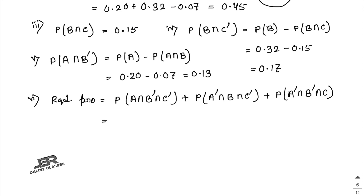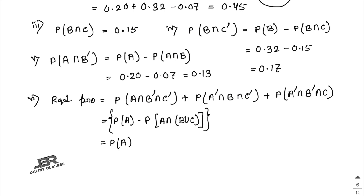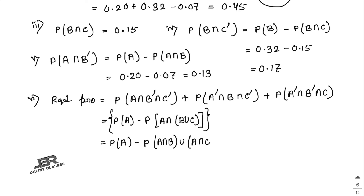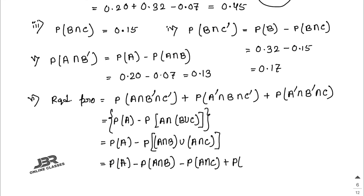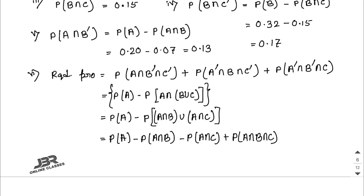For the first term: P(A) − P(A ∩ (B ∪ C)) = P(A) − P(A ∩ B) − P(A ∩ C) + P(A ∩ B ∩ C). Substituting: 0.20 − 0.07 − 0 + 0 = 0.13.